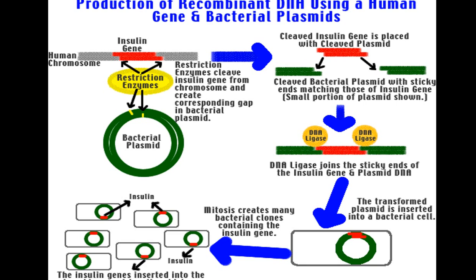When the cell divides, the bacterial plasmid also divides. From one bacterium with a hybrid plasmid DNA, as it undergoes division in the medium, the bacteria multiply, which means the plasmid is also multiplying and the insulin gene is also multiplying. The insulin gene inserted into the plasmid expresses insulin, which can be collected for human use.